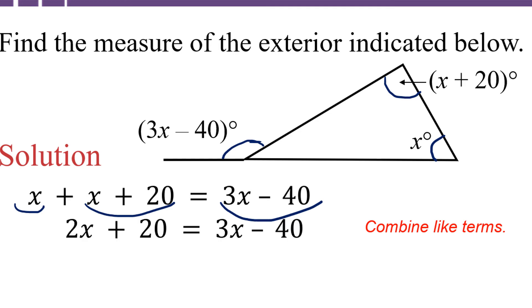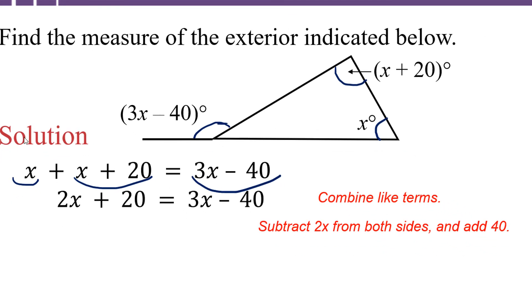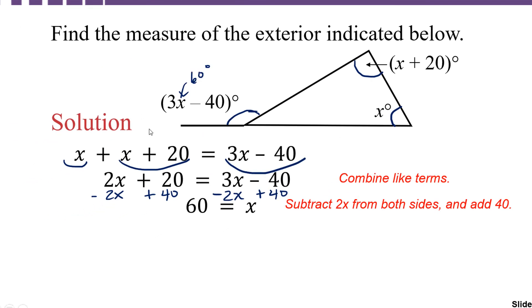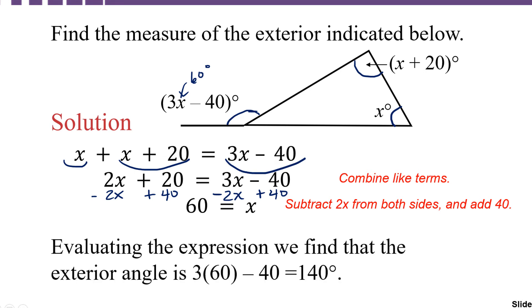We're going to solve that equation by combining like terms on the left-hand side, which is going to give us 2x plus 20 equals 3x minus 40. When we're solving an equation and we have x terms and constant terms, we want to get the x terms to one side and the constant terms to the other. The next thing I'm going to do is subtract 2x from both sides, and I'm going to add 40 to both sides. We're going to get x equals 60. We weren't asked to find x, we were asked to find the measure of the exterior angle, which is 3x minus 40. We're going to have to plug 60 in for x. 3 times 60 is 180 minus 40 is going to give us 140 degrees.